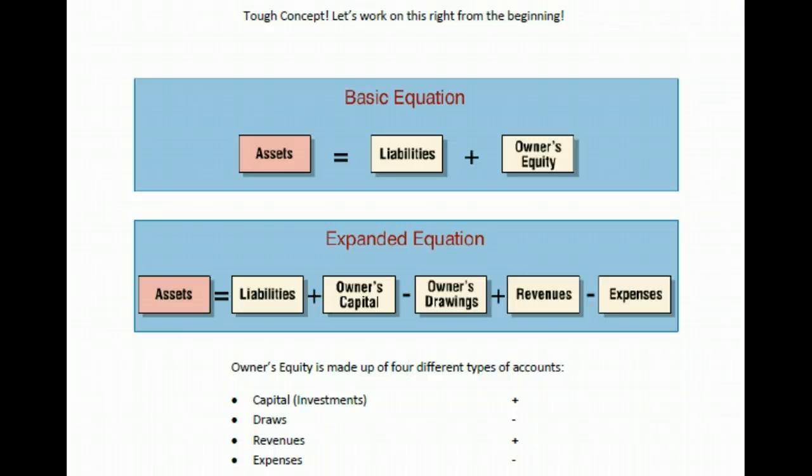So when you're working with the basic accounting equation, it's important to remember it has four different types of accounts that are included within it, and the sum of the four of those accounts—two of which increase and two of which decrease—are shown in the basic accounting equation as the total of owner's equity.